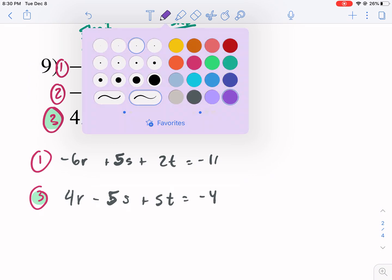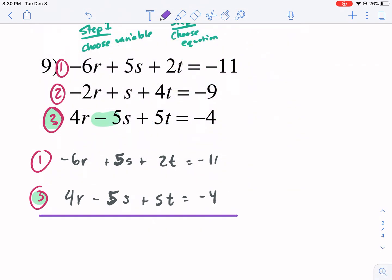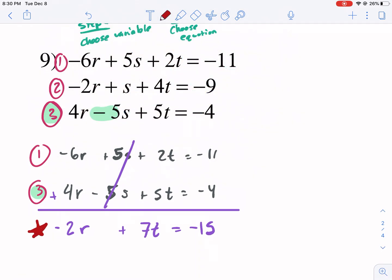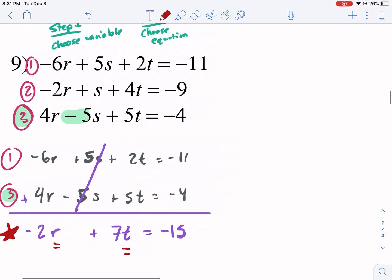Four R minus five S plus five T equals negative four. Okay. It's ready to eliminate. Notice how the five and the negative five are already opposites. So it's ready to eliminate. I'm going to get negative two R. This eliminates. That's the whole point. Plus seven T equals negative 15. So I'm done. I got my first equation with two variables. That's step one.